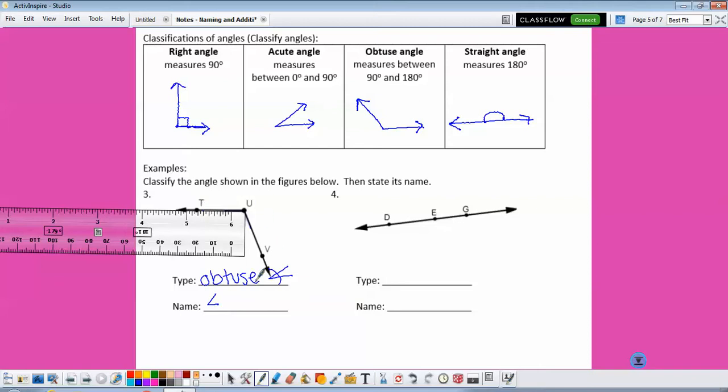So we could name this angle TUV, or we could name it angle VUT, or we could name it angle U.